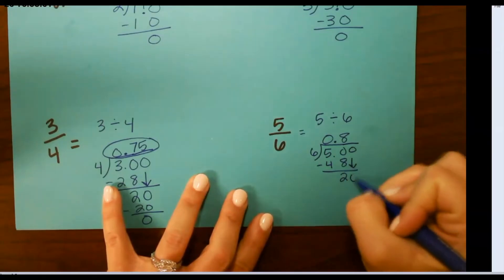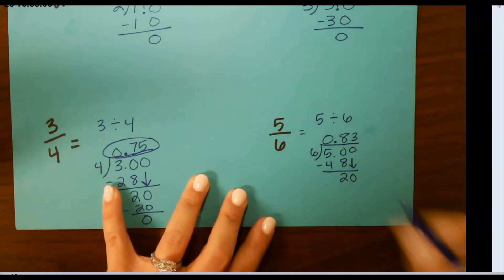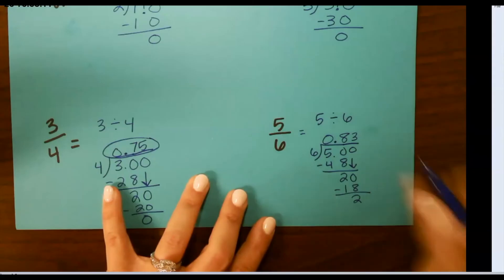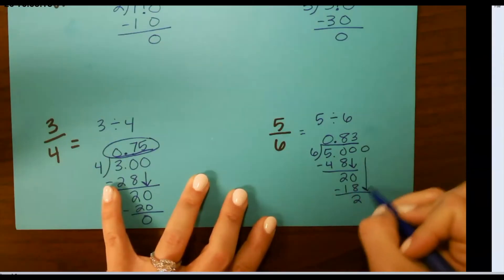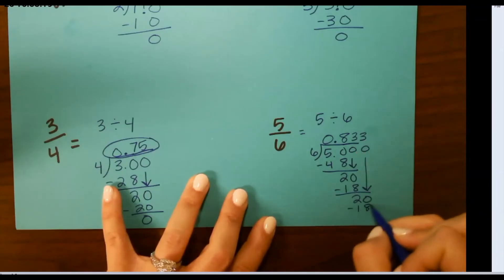Add a 0 and bring it down. 6 goes into 20 3 times. 3 times 6 is 18. Subtract and that will give me 2. If I add a 0 and drop it down, we're back to 6 going into 20 3 times.